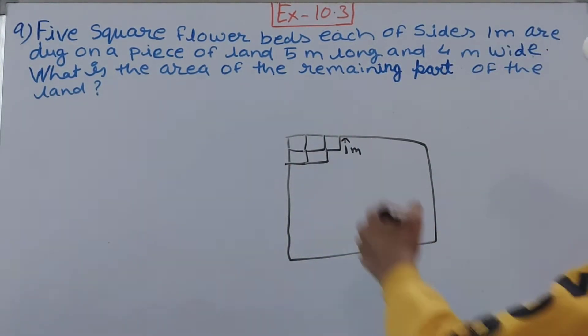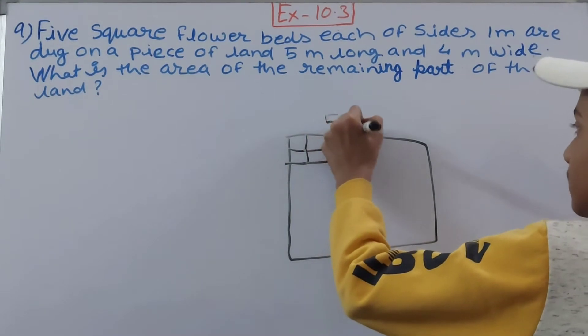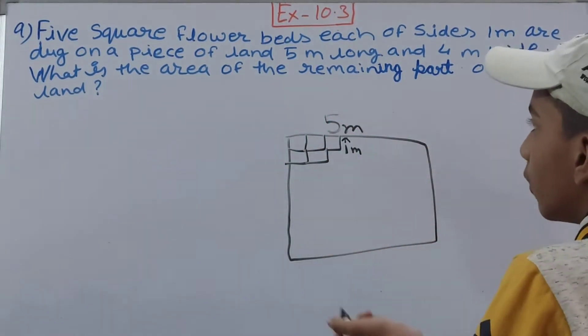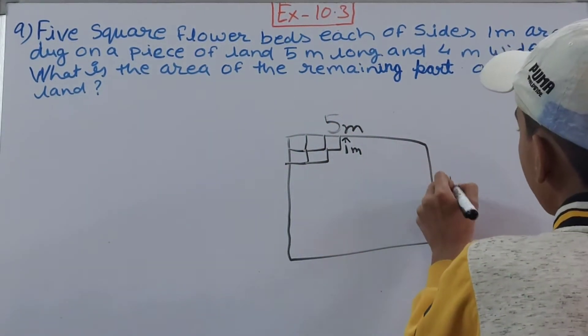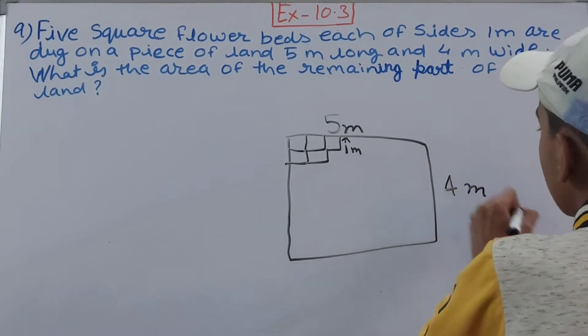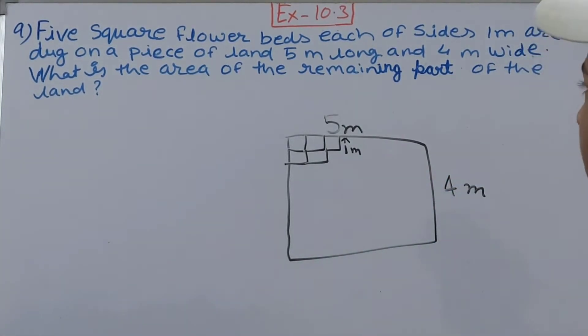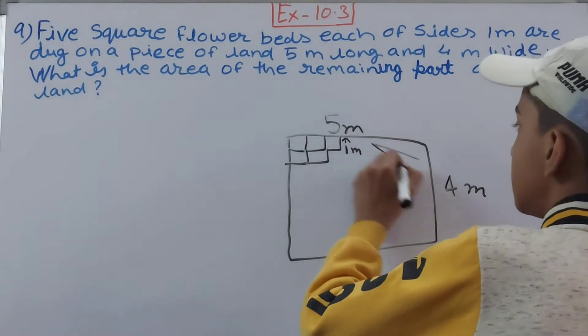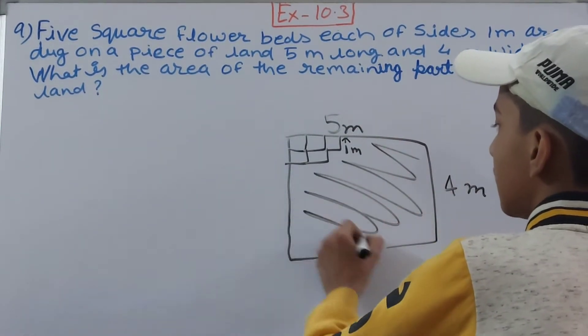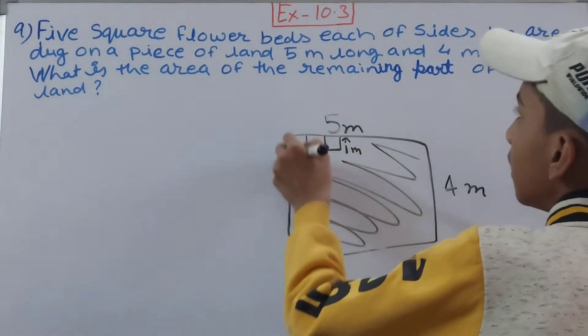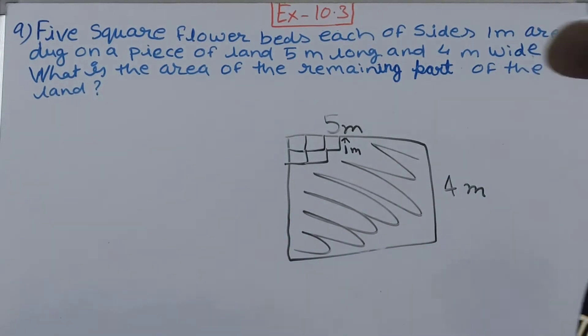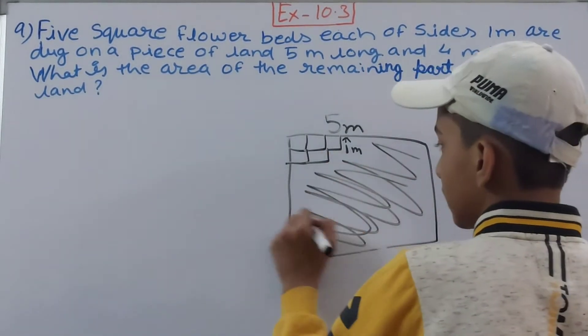The length or the dimension of this park or your plot of land is 5 meters by 4 meters. Now you have to find the area which is left after digging out the flower beds. This much of area which is left, you have to find.